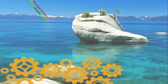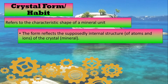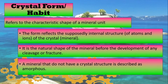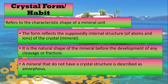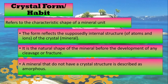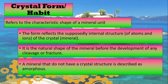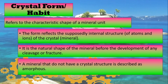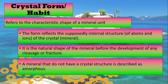Next is crystal form or habit. It refers to the characteristic shape of a mineral unit. The form reflects the internal structure of atoms and ions of the crystal or mineral. It is the natural shape of the mineral before the development of any cleavage or fracture. A mineral that does not have a crystal structure is described as an amorphous mineral.